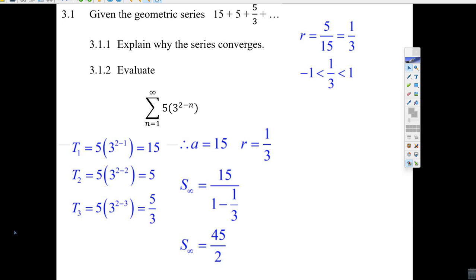Okay, let's try the geometric series question. It says 15 plus 5 plus 5 over 3, and this dot dot dot means it kind of goes on forever.